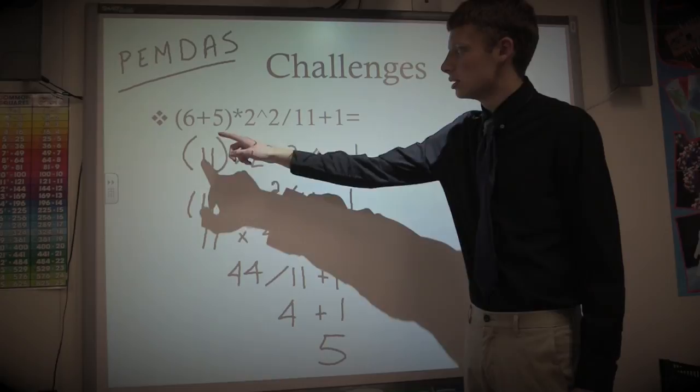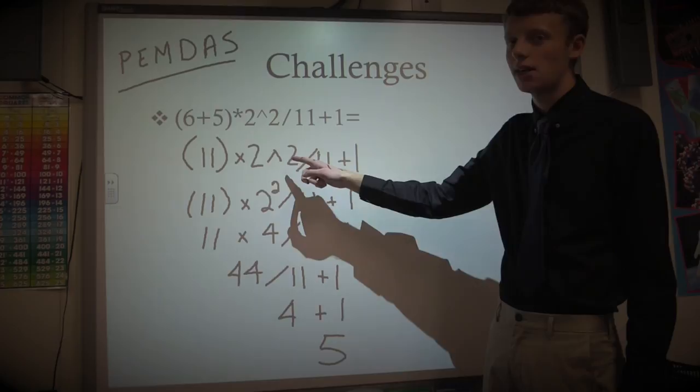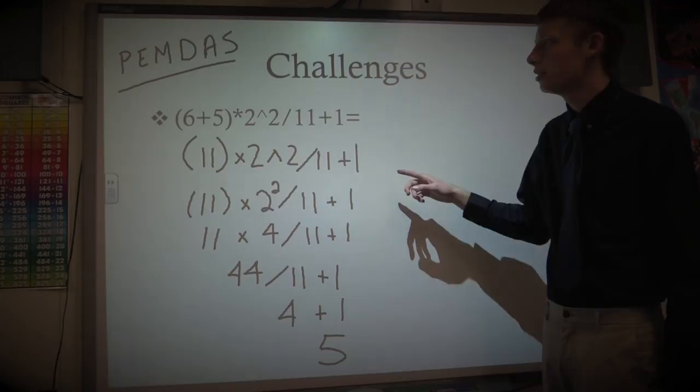Now, the first thing you should have been doing was adding the 6 and the 5, because they're in the parentheses, so they come first. So that equals 11. So your new equation is 11 times 2 to the power of 2, remember that caret sign is the power of, divided by 11 plus 1.